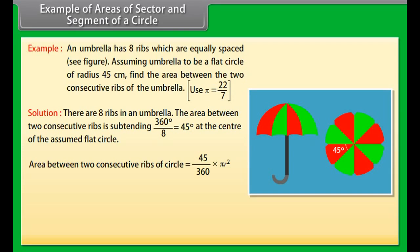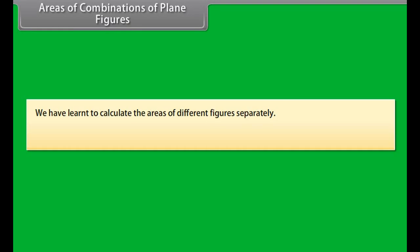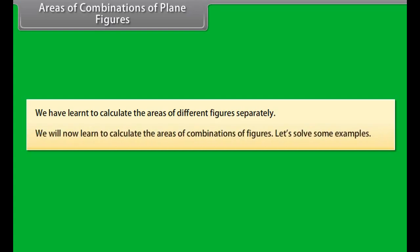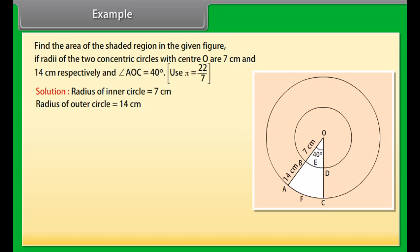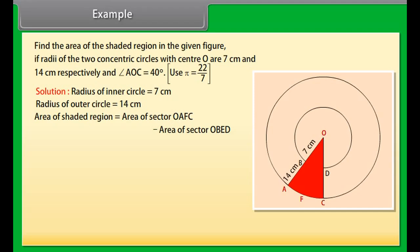Example: An umbrella has 8 ribs which are equally spaced (see figure). Assuming the umbrella to be a flat circle of radius 45 centimeters, find the area between two consecutive ribs. Use pi as 22/7. There are 8 ribs, so the area between two consecutive ribs subtends 360 / 8 equals 45 degrees at the center. Area between two consecutive ribs equals (45/360) times pi r square, giving 2275/28 centimeters square.